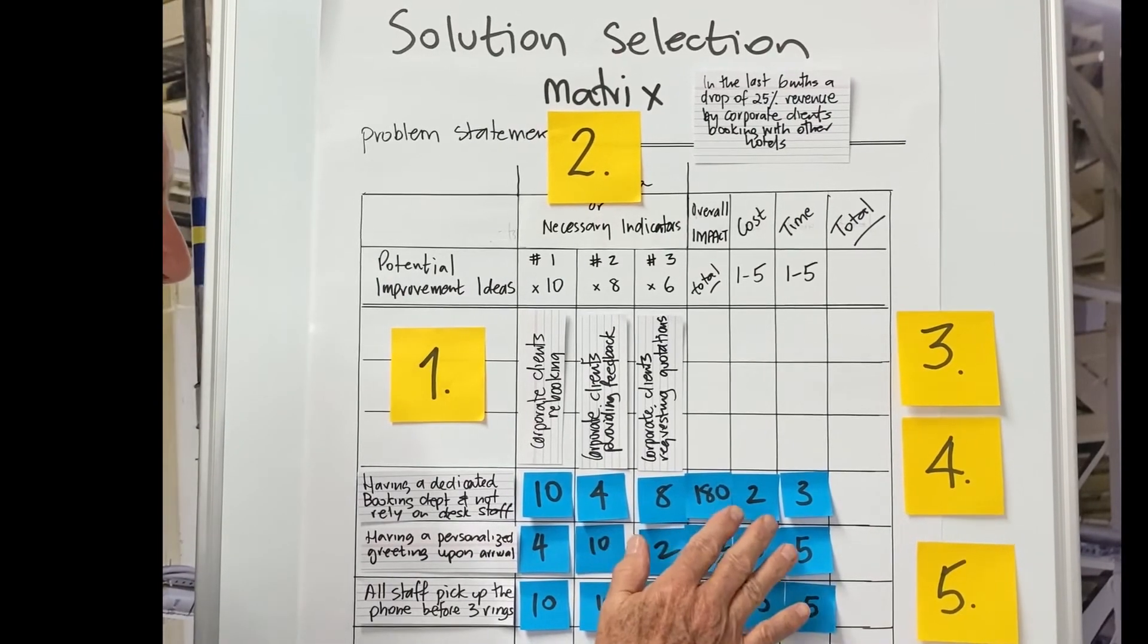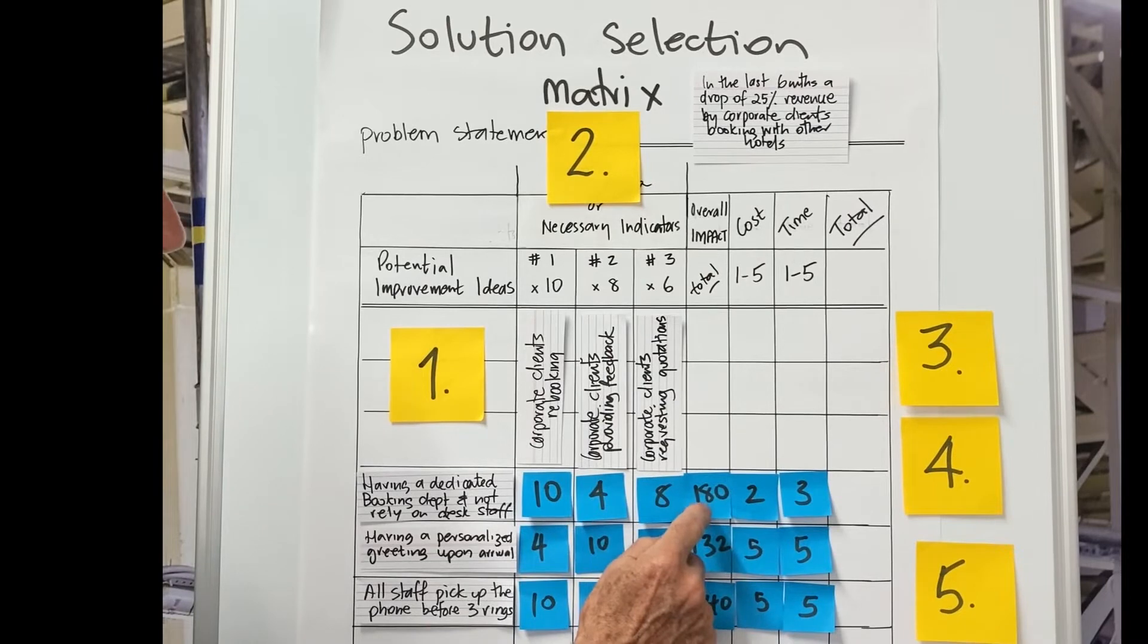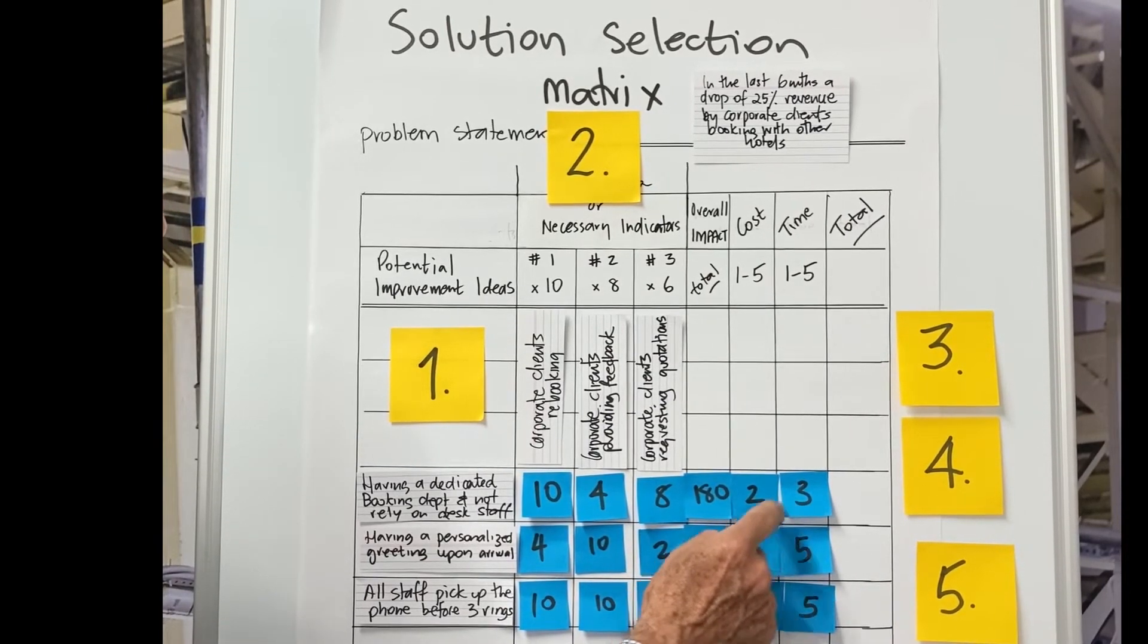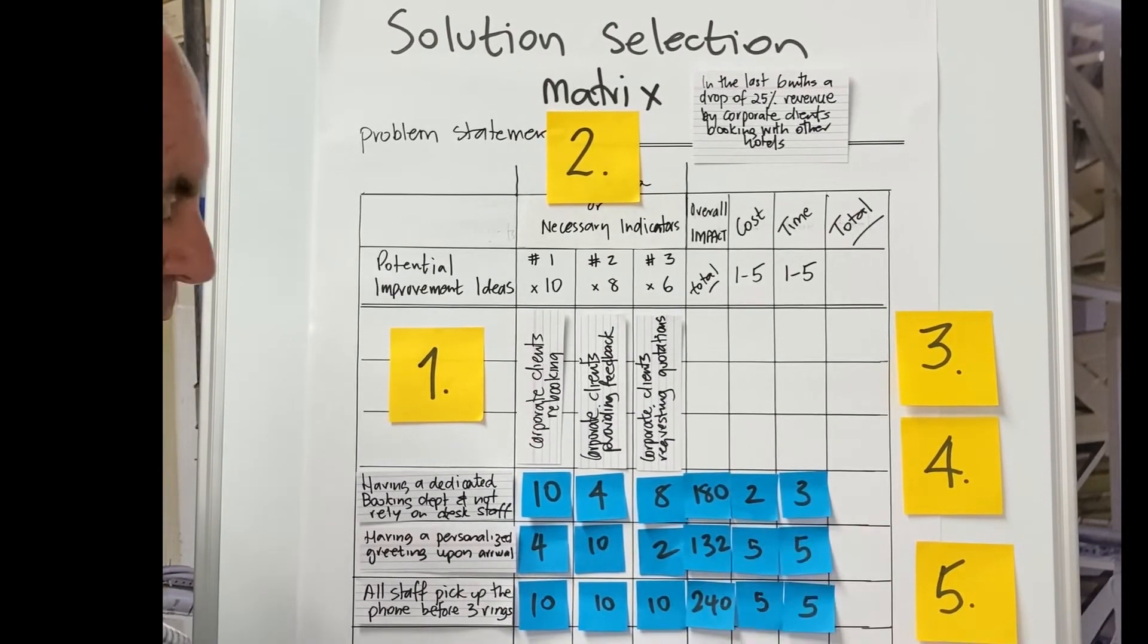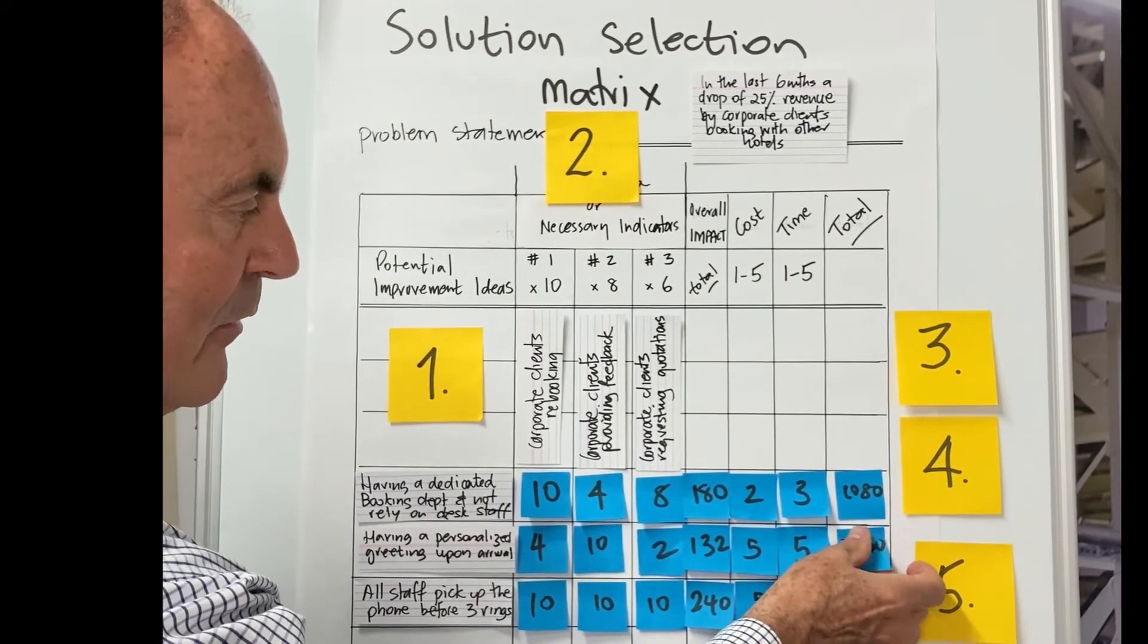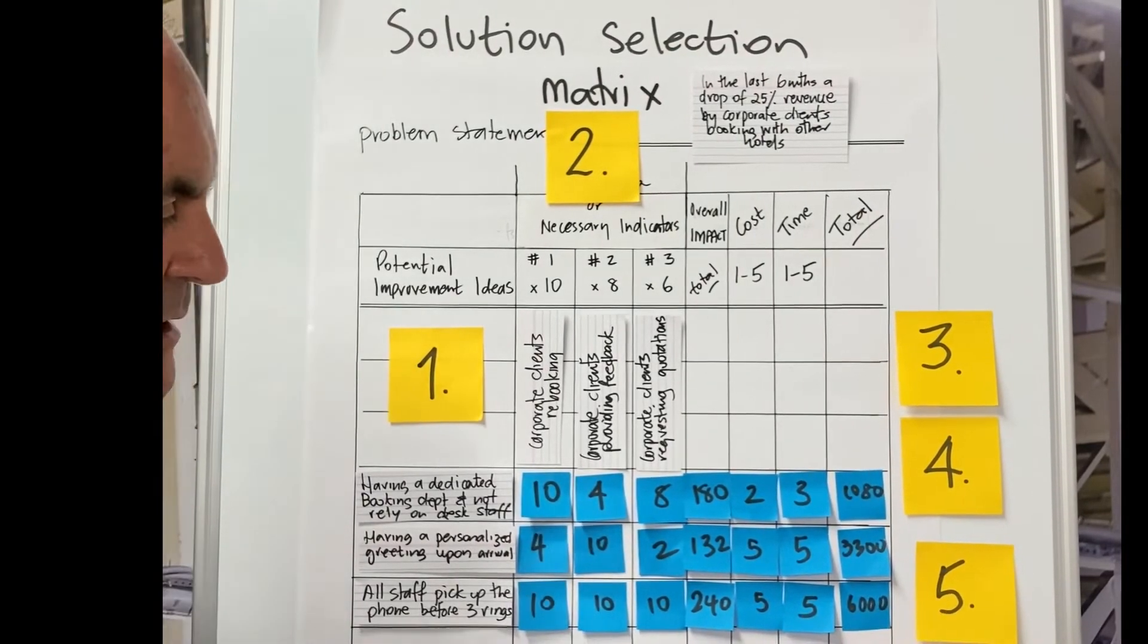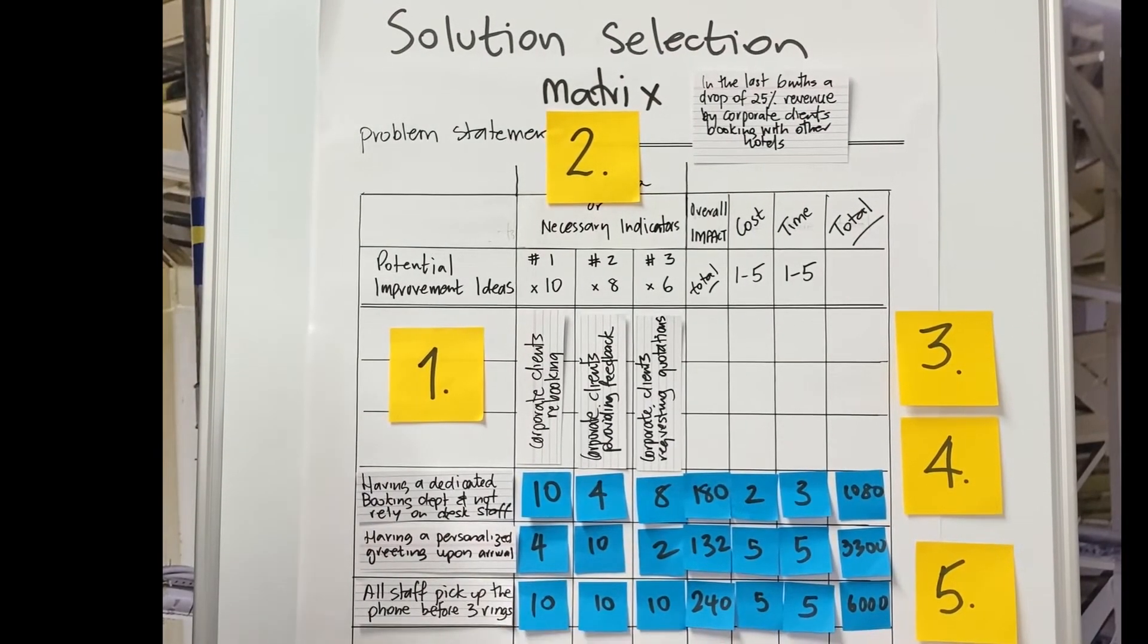So once we've got all these numbers populated, then we're going to multiply the impact column by the cost column by the time and end up with a total. This is where we start to see that there's a separation objectively for all the ideas. Now we're starting to see a prioritization.